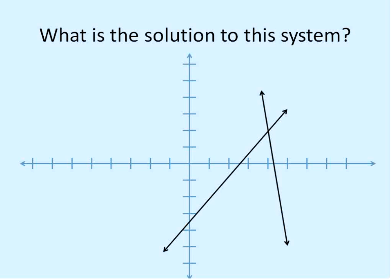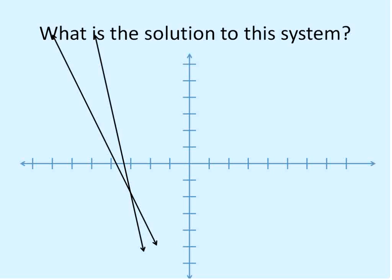So here's a consistent independent system. We can look at the point where they cross right there, and that's the solution for the system. In this case, again, it's a nice obvious point, 4, 2. Or we could say x equals 4, y equals 2. That's the solution for this consistent independent system.